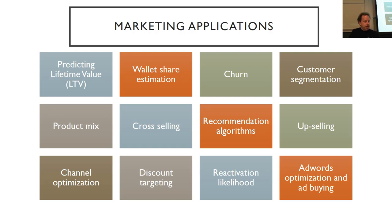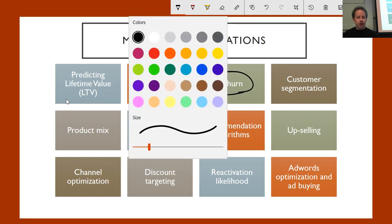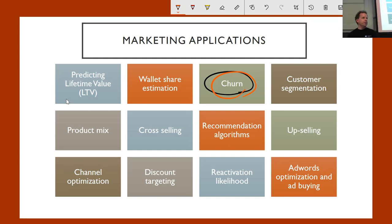Let's take an example: churn. Churn refers to a model which attempts to predict who's going to leave. I've done some churn modeling fairly recently in telecommunications — we're trying to figure out for a big cell phone company which customers are going to leave. But that is not of itself that interesting, because if someone is almost certainly going to leave next month, there's probably nothing you can do about it. It's too late; it's going to cost too much to keep them.